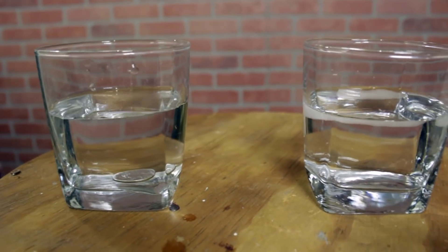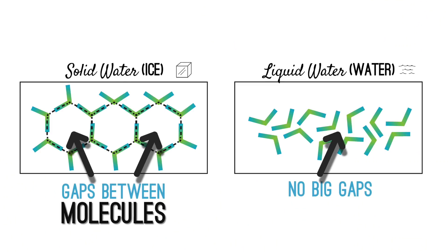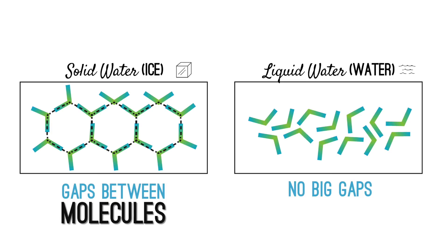With these hexagon ice crystals, there are holes in between each molecule, meaning the molecules aren't packed as tightly as they could be compared to liquid water. And if they aren't packed as tight, then ice is less dense, causing it to float.